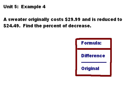Our formula is written on the board. It is the difference divided by the original. So, the first thing I'm going to do is find the difference between my two numbers. I have $29.99 and $24.99. Difference means subtract.